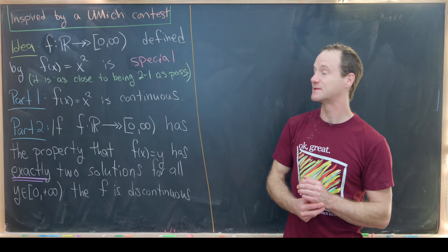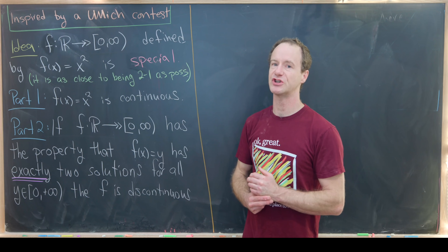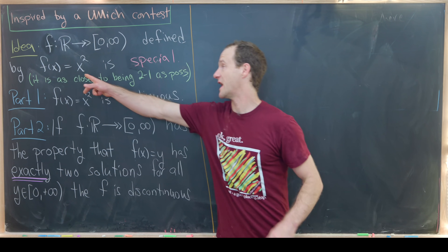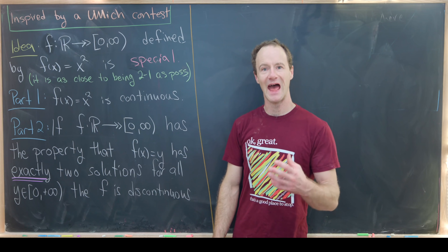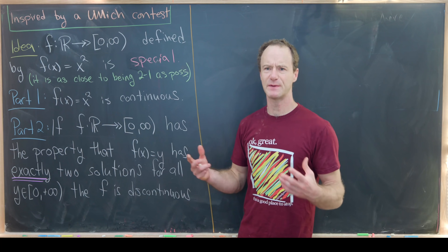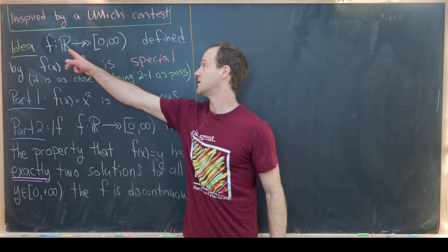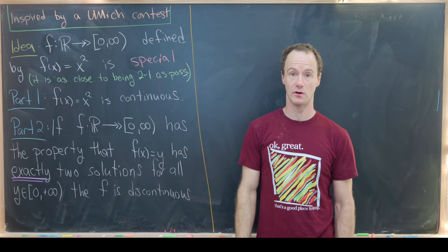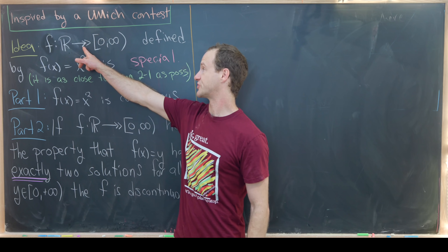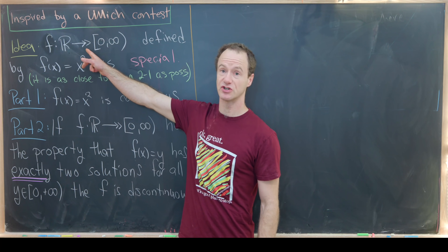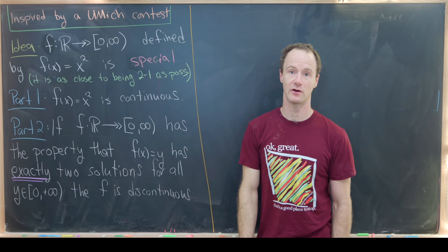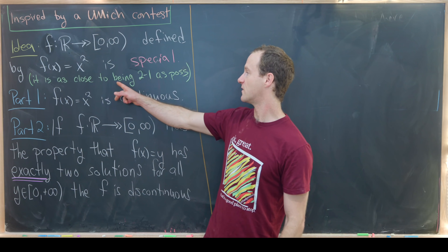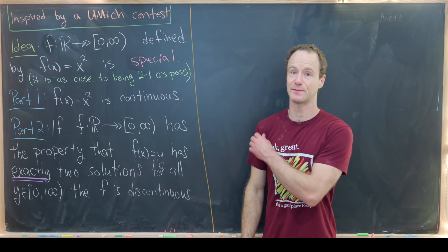Here I've got a nice problem inspired from a University of Michigan undergraduate math contest. The basic idea is to show that f(x) = x² has a special property: among all functions from the real numbers to the interval [0, ∞) that are surjective, it is as close to two-to-one as possible.